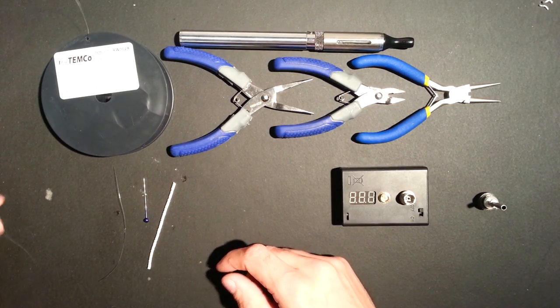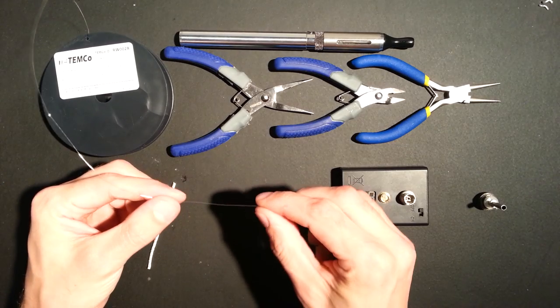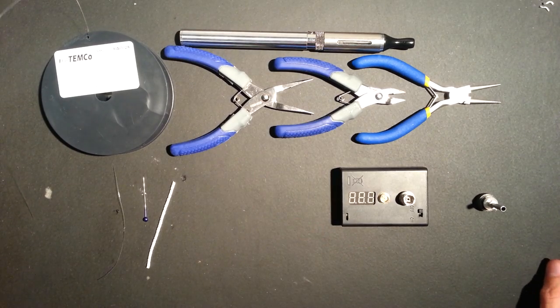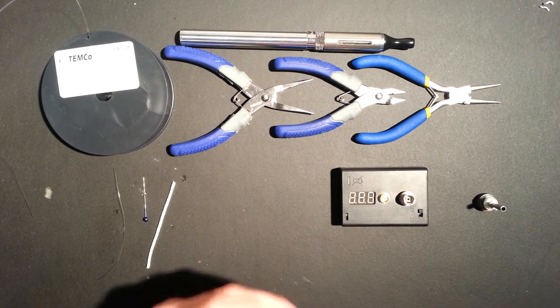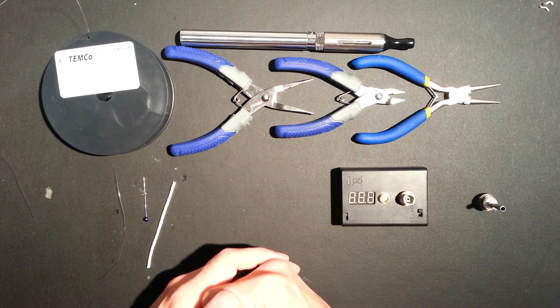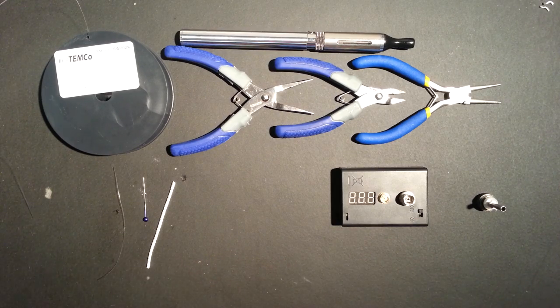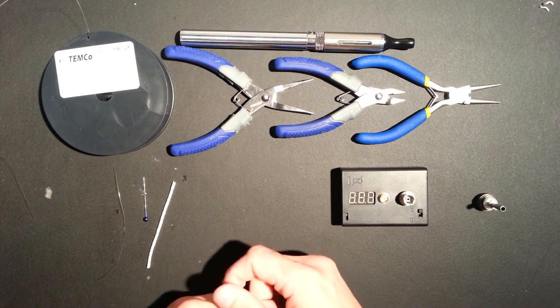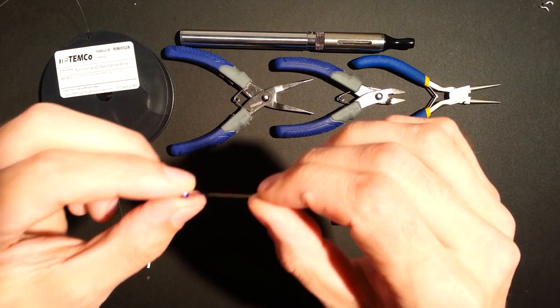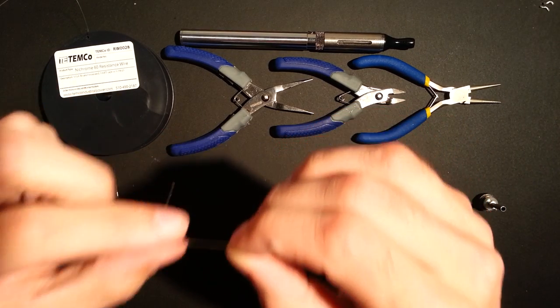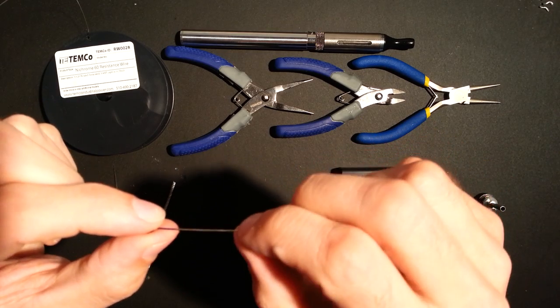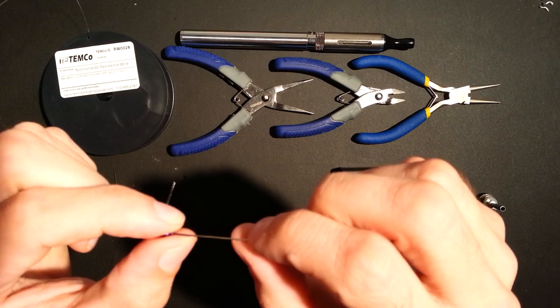Now we're going to be using some Nichrome 32-gauge 60-resistance wire. That's what I use personally. I go for lower resistance in my atomizers, mostly because I have non-variable voltage batteries as a fallback, and I want to be able to vape no matter which battery I have that's still alive at that point.